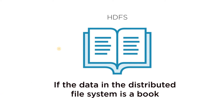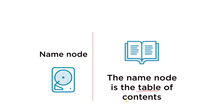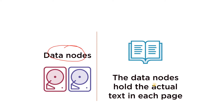Hello friends, welcome to our channel Knowledge Amplifier. Today in this video I am going to complete the Hadoop Distributed File System Architecture for Hadoop 1.x. In my previous video I started discussion on HDFS storage architecture for Hadoop 1, and we concluded that if the data in the distributed file system is a book, then the NameNode is the table of contents and the actual content is stored in the DataNode.